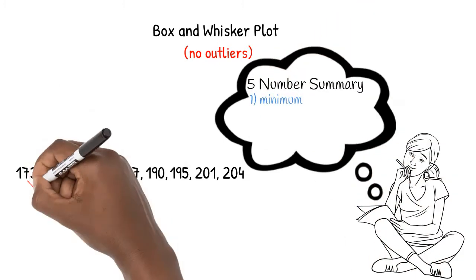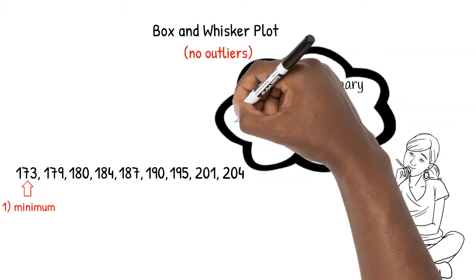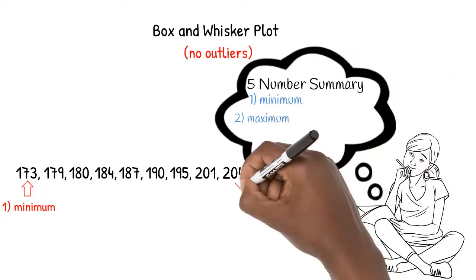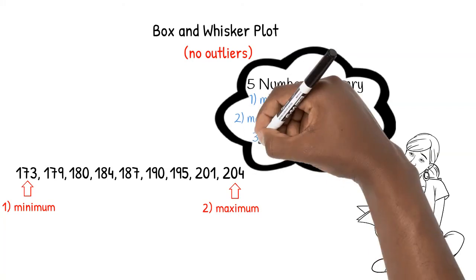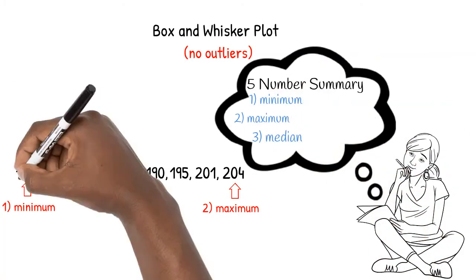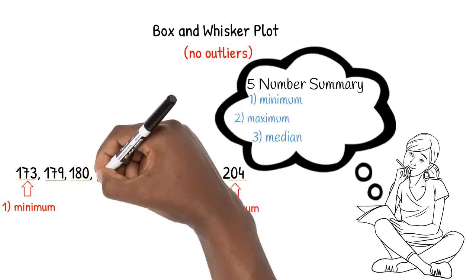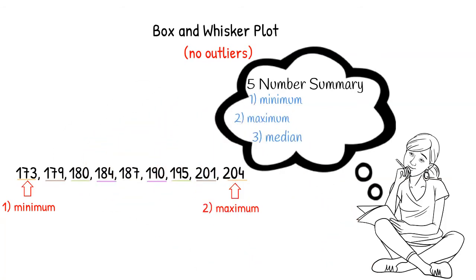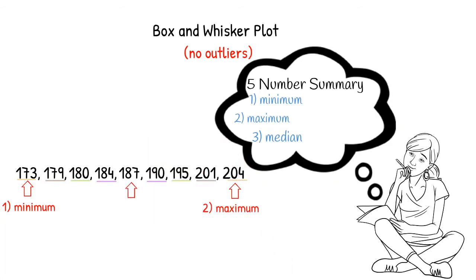First, we determined the minimum, the smallest number in the list. Then, we determined the maximum, the largest number. After making sure our numbers were listed in size order, we then eliminated pairs of numbers, starting first with the smallest and the largest, then moving inwards until we found the middle number, the median.